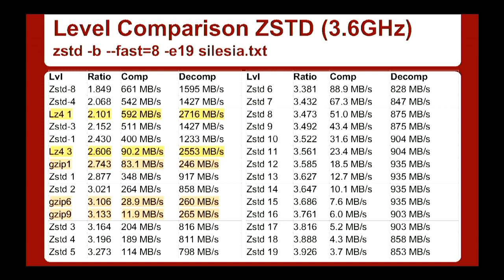Now for the fun part: looking at the comparison of compression levels with ZStandard. Starting at compression level negative 8, you get a compression ratio of about 1.85 to 1, and it's actually faster than LZ4 — though decompression isn't quite as fast. At negative 4, you get within a rounding error of the same compression level as LZ4 and pretty close on speed. At negative 3, you get slightly better compression than LZ4 for almost the same speed. At negative 1, you get significantly better compression with only modestly less speed. All these speeds are per core on a 3.6 GHz processor — my NAS at home.